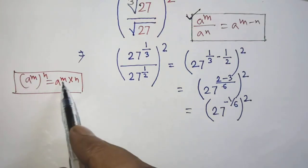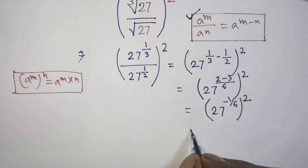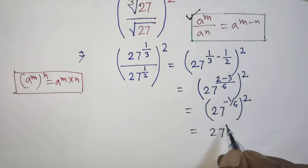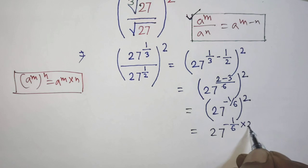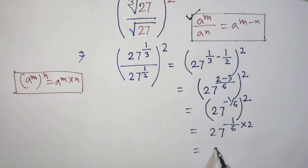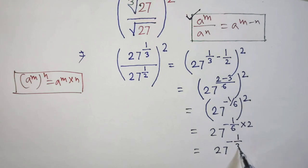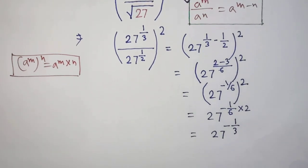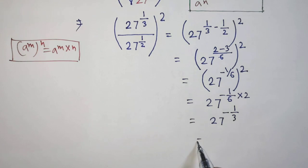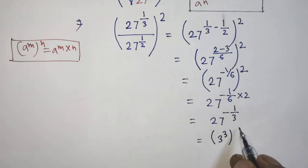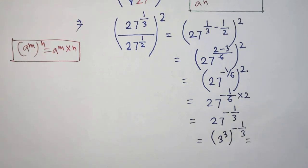According to this formula, it will be 27 to the power minus 1 over 6 times 2. Then it will be 27 to the power 3, written as 3 to the power 3, whole to the power minus 1 over 3. Similarly, according to this formula, it will be 3 to the power 3 times minus 1 over 3.